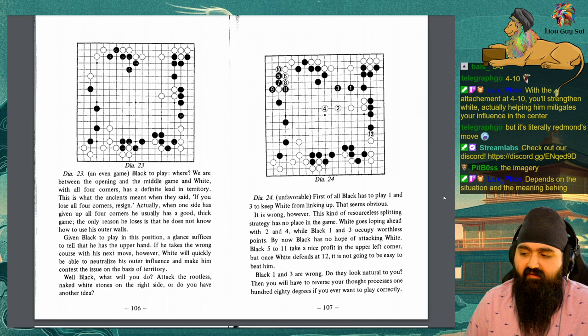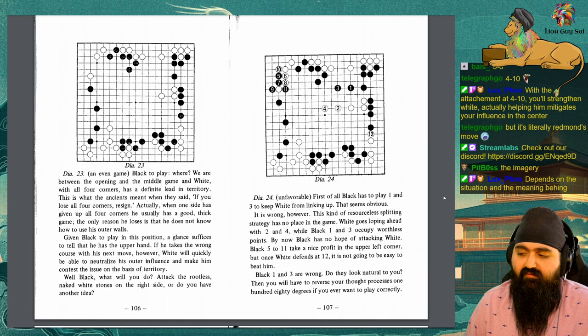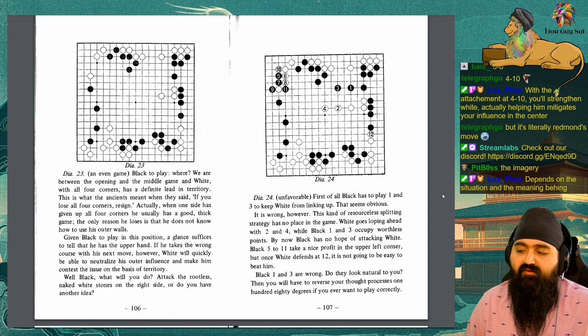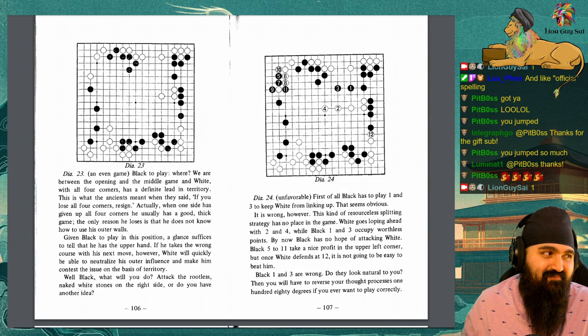Given black to play in this position, a glance suffices to tell that he has the upper hand. If he takes the wrong course with his next move, however, white will quickly be able to neutralize his outer influence and make him contest the issue on the basis of territory. Well, black, what will you do? Attack the rootless, naked white stones on the right side?